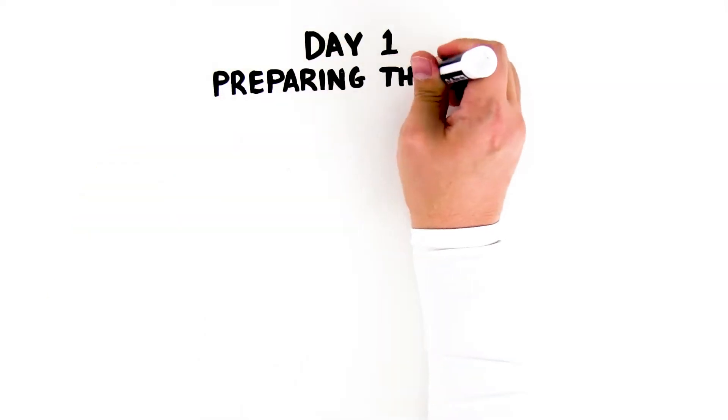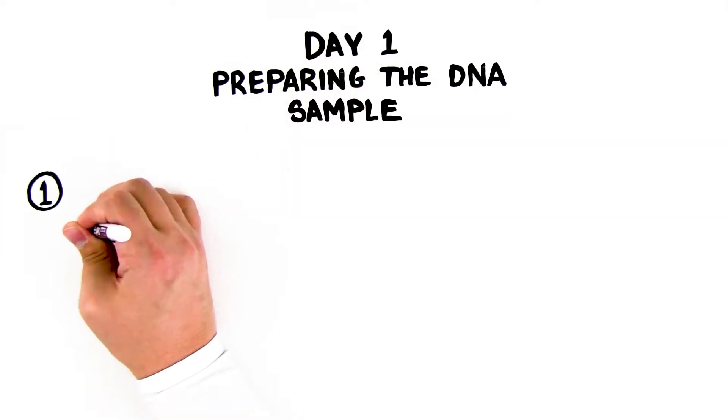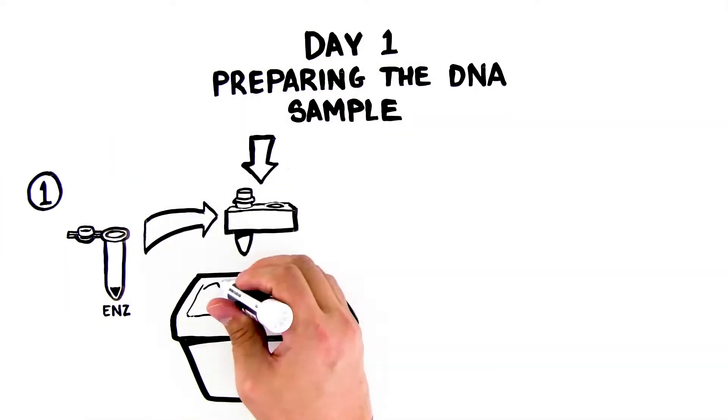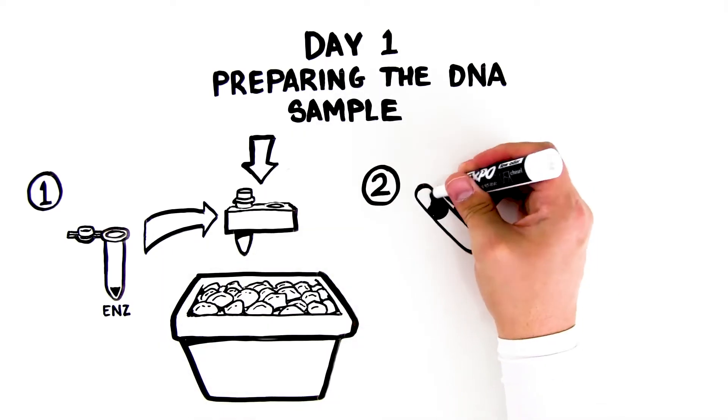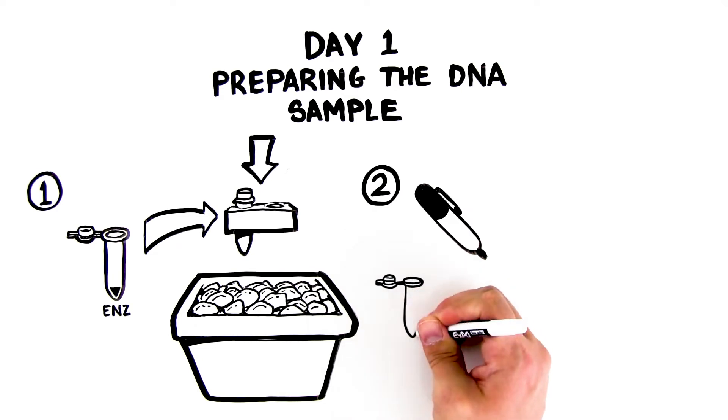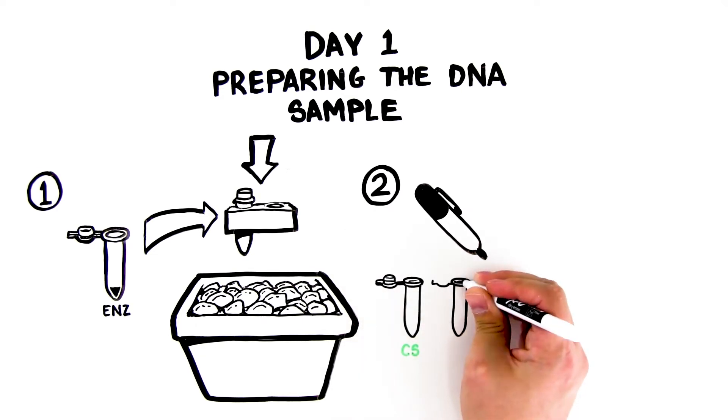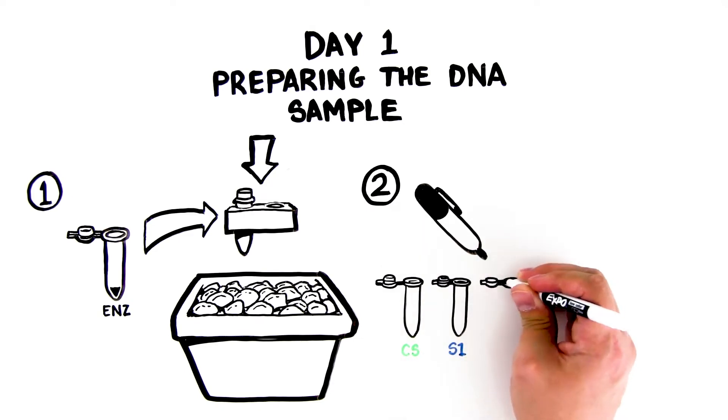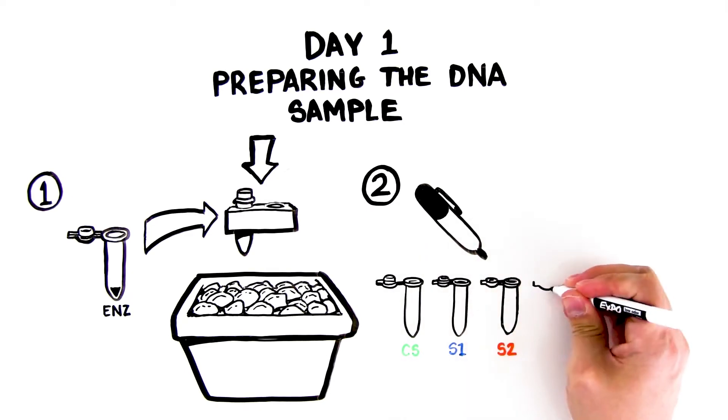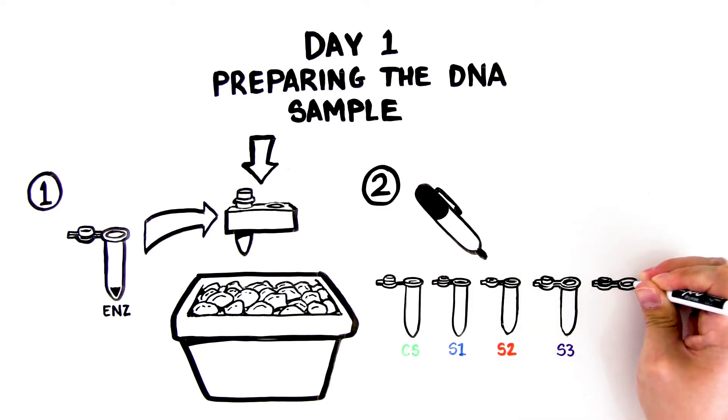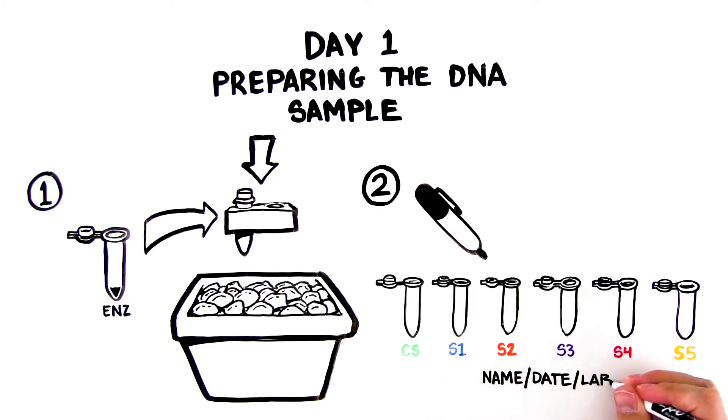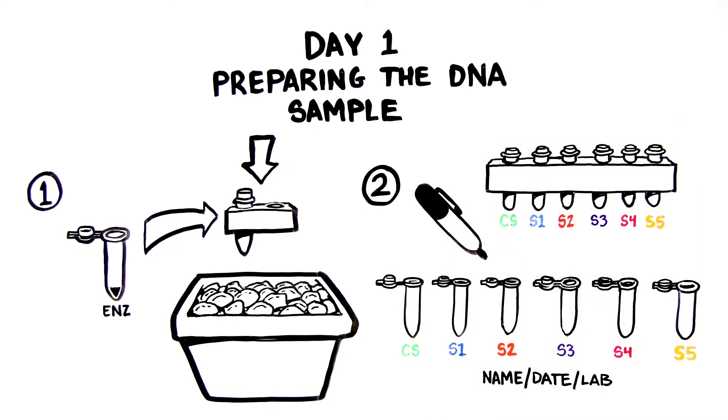Day 1. Preparing the DNA sample. First, place the tube containing the restriction enzyme mix labeled ENZ on ice. Second, label one of each colored microtube as follows: Green CS equals crime scene, Blue S1 equals suspect 1, Orange S2 equals suspect 2, Violet S3 equals suspect 3, Red S4 equals suspect 4, Yellow S5 equals suspect 5. Label the tubes with your name, date, and lab period. Place the tubes in the foam microtube rack.